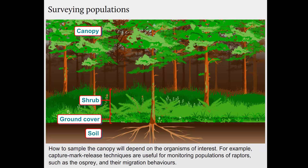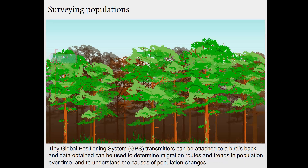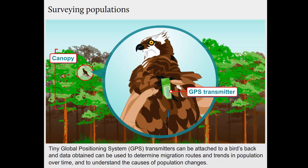How to sample the canopy will depend on the organisms of interest. For example, capture mark release techniques are useful for monitoring populations of raptors, such as the osprey, and their migration behaviours. Tiny GPS transmitters can be attached to a bird's back, and data obtained can be used to determine migration routes and trends in population over time, and to understand the causes of population changes.